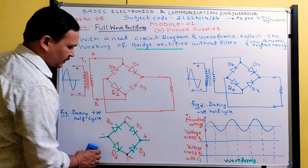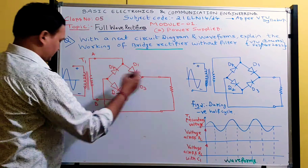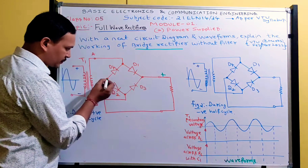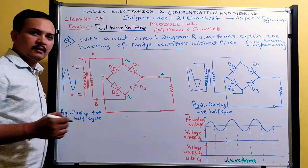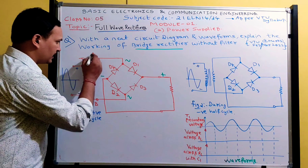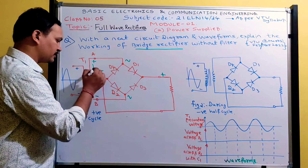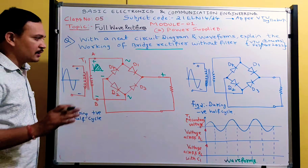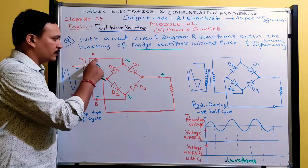Pause the video and copy down the circuit. Now I will explain the working. This point is positive and this point is negative on the DC output side. During the positive half cycle, terminal A becomes positive and terminal B becomes negative. This is the secondary voltage of the step-down transformer applied to the circuit.